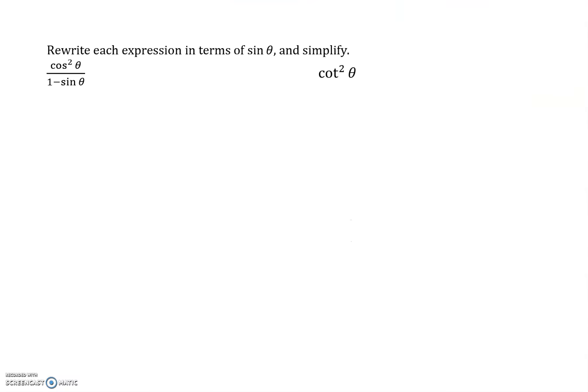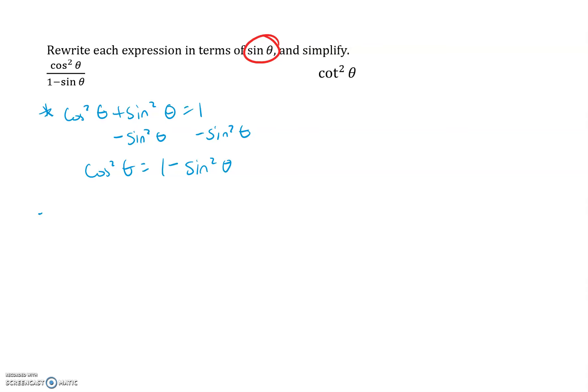The last two you-tries ask us to rewrite expressions in terms of sine — different from the notes where we used cosine. Always simplify as much as you can. The first one is cosine squared theta over one minus sine theta. Where have I seen a relationship between cosine squared theta and sine theta? The Pythagorean identity: cosine squared theta plus sine squared theta equals one. I can solve for cosine squared theta by subtracting sine squared theta from both sides, giving cosine squared theta equals one minus sine squared theta. So I'll replace cosine squared theta with one minus sine squared theta.